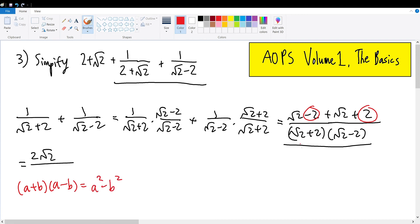Our a term in this case will be √2 and our b term will be 2. Therefore we can apply this formula and simplify the denominator to get 2 - 4. This then becomes 2√2 over -2.